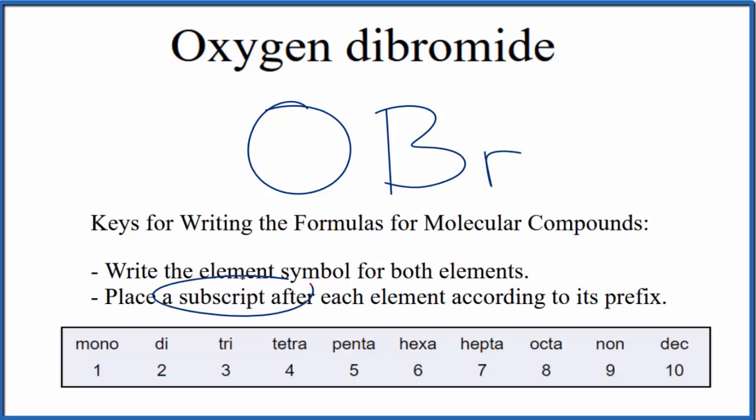Next, we'll place a subscript after each element according to its prefix. For oxygen, since we only have one oxygen, we don't write mono because this is the first part of the name. Since it doesn't have any other prefix, there's only one oxygen. By convention, we don't write that though, it's assumed to be there.